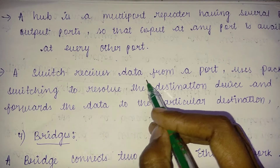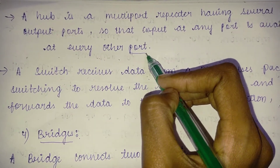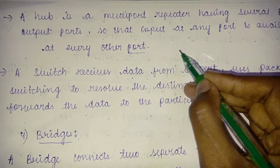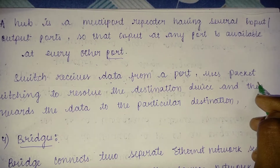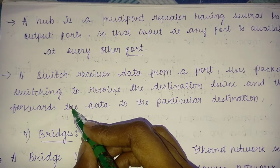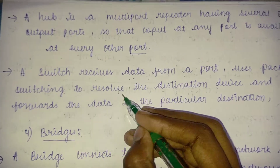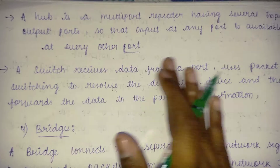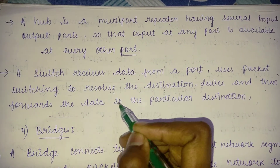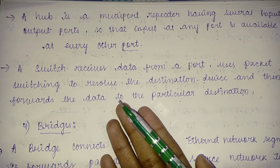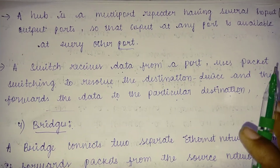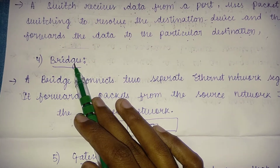A switch receives data from a port and uses packet switching to resolve the destination device. It then forwards the data to the particular destination. So it doesn't just resolve the destination device — it forwards data directly to that specific destination.